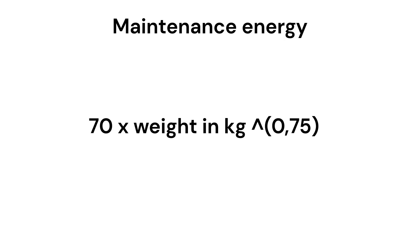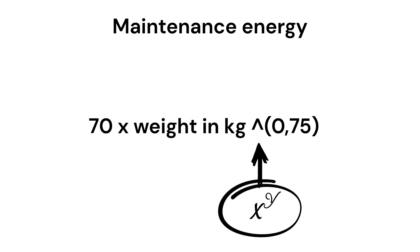This is the formula we will be using: we are going to take 70, multiply that with the dog's weight in kilograms, and raise it to 0.75. You can easily do this on a calculator — to raise the number you click on the X to the Y button.